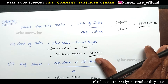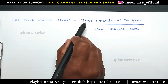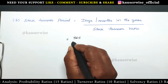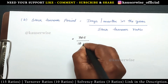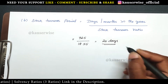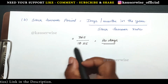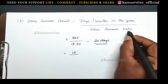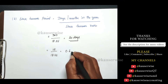Now see the calculation for stock turnover period. First we are going to find out the stock turnover period in days. How many days in a year? 365 divided by stock turnover ratio 18.55 gives approximately 20 days. You can round off the figure. And next, the stock turnover period in months: 12 months in the year divided by stock turnover ratio 18.55 times is equal to 0.6 months.